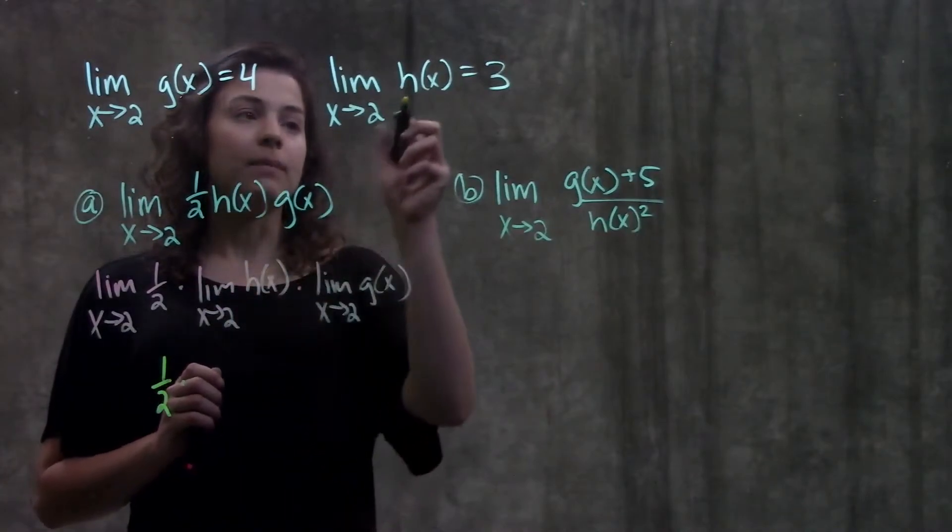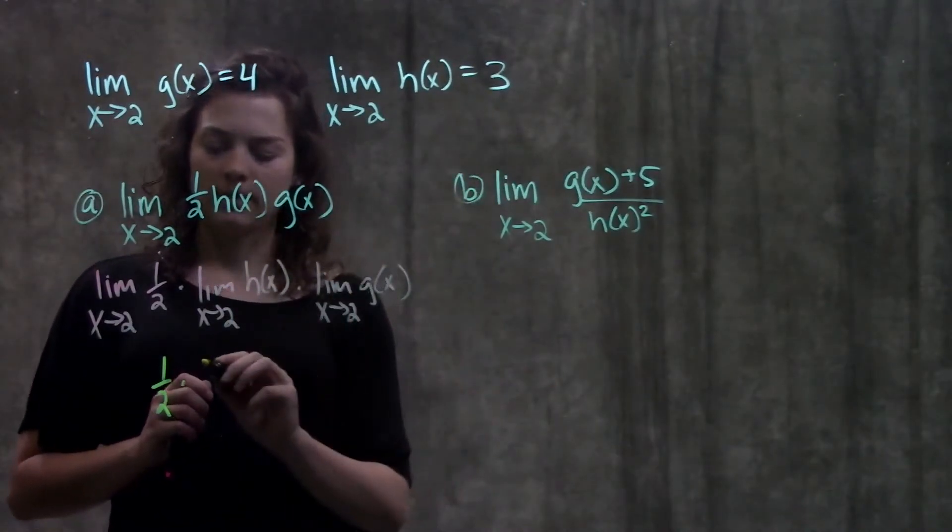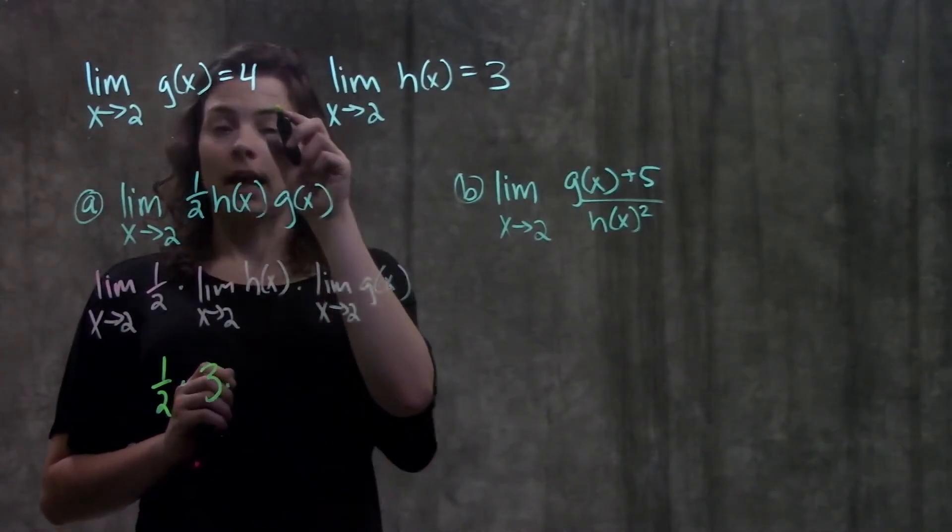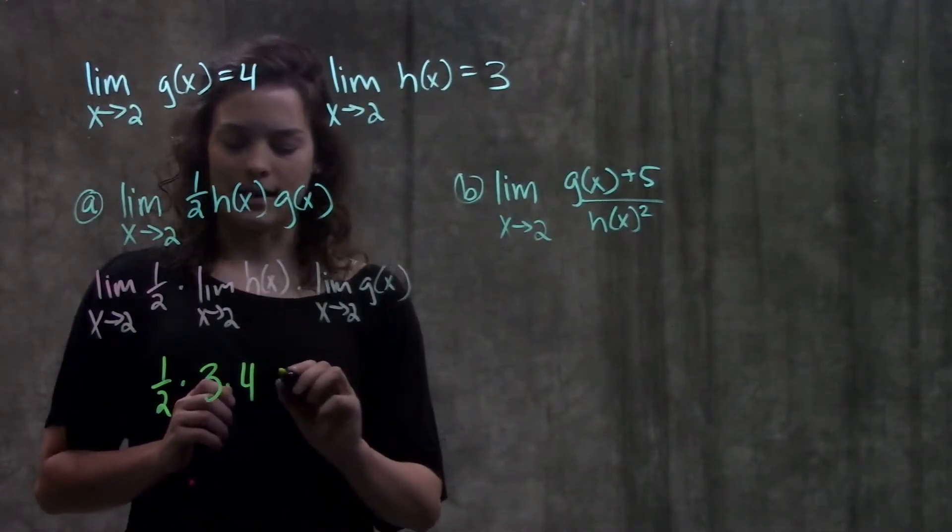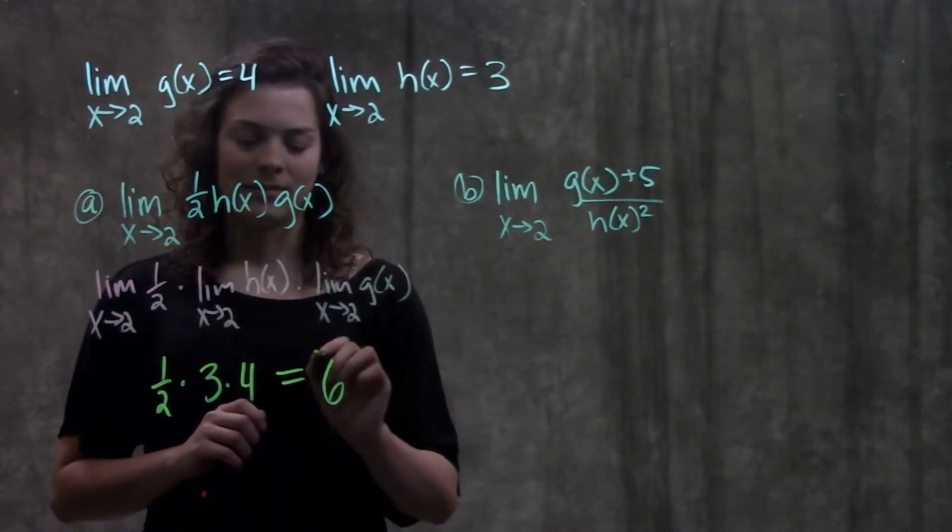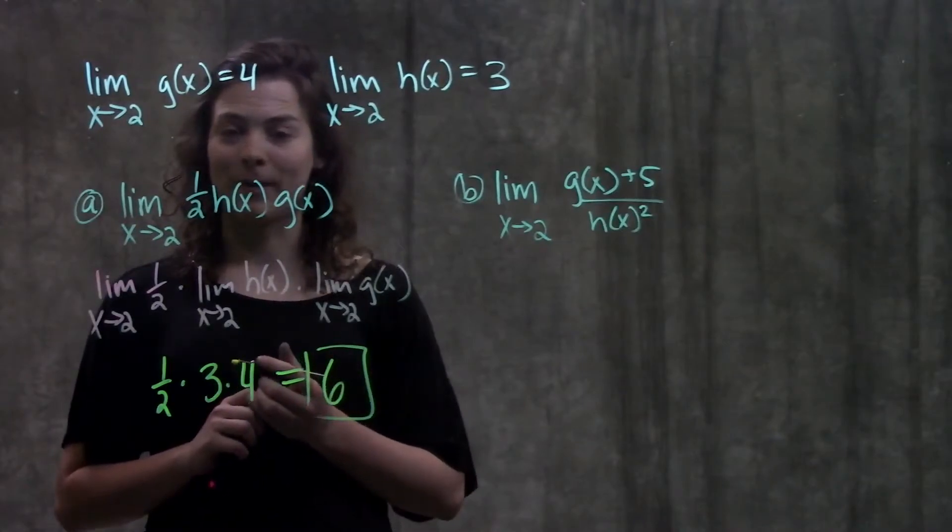For this limit they tell me that h of x is equal to 3, and for this last limit here they tell me that this value is equal to 4. I can just plug that in. Multiplying all this out, you get that this limit is equal to 6. And that's it for part A.